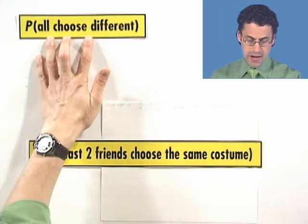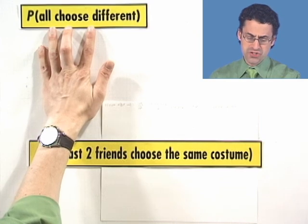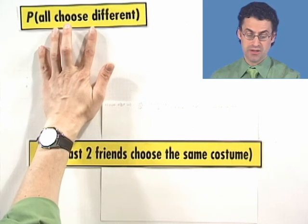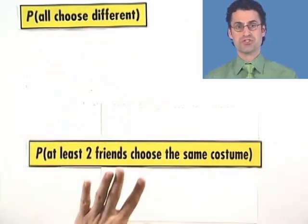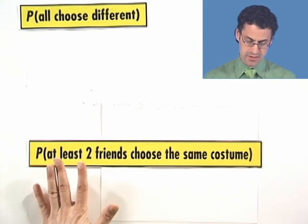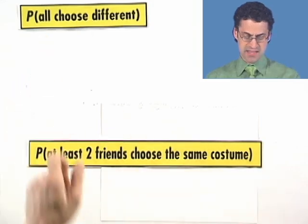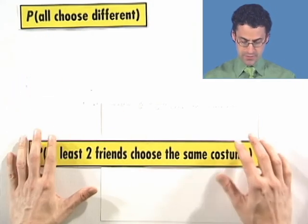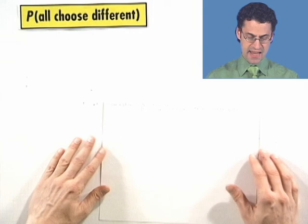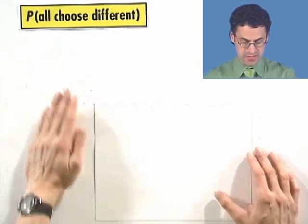It doesn't happen that at least two friends choose the same costume. If you think about what that means grammatically, it means that everyone chooses a different costume. So now, let's first find the probability that all choose different costumes.